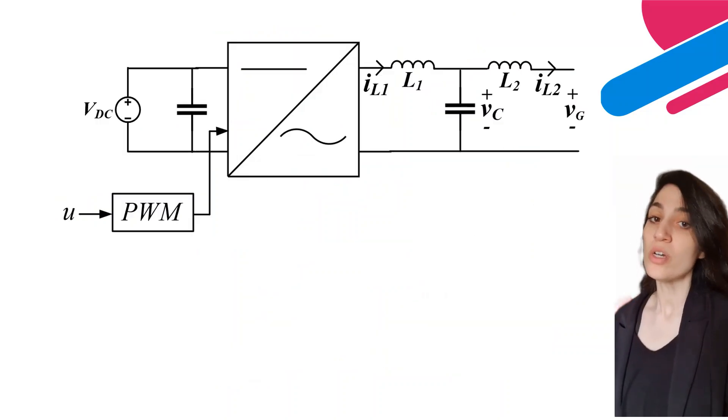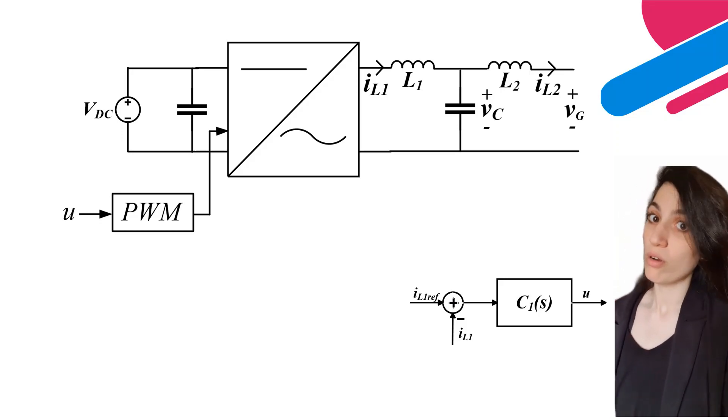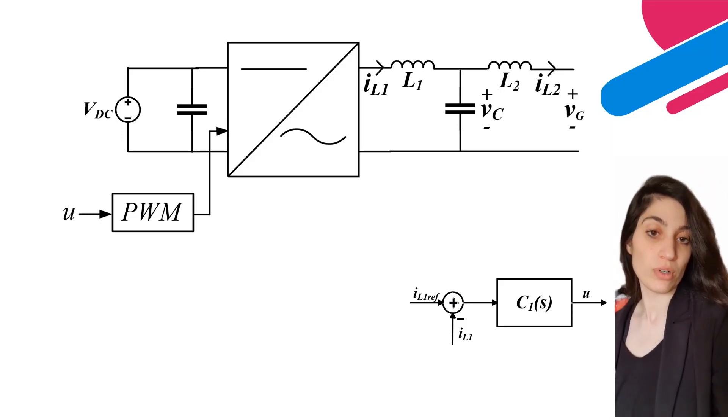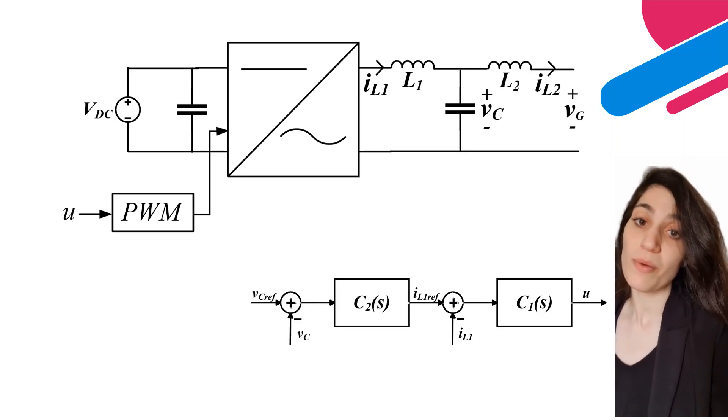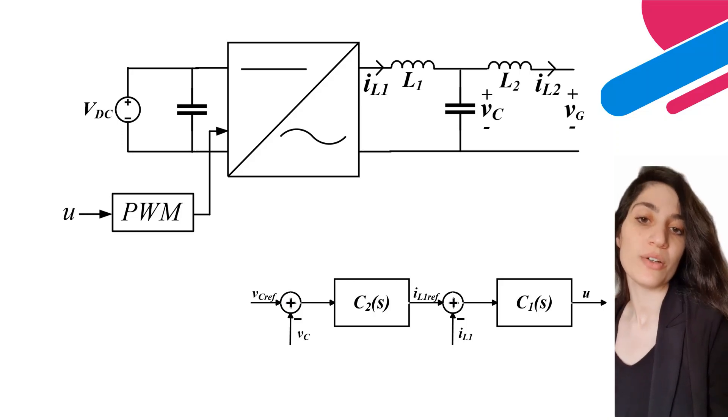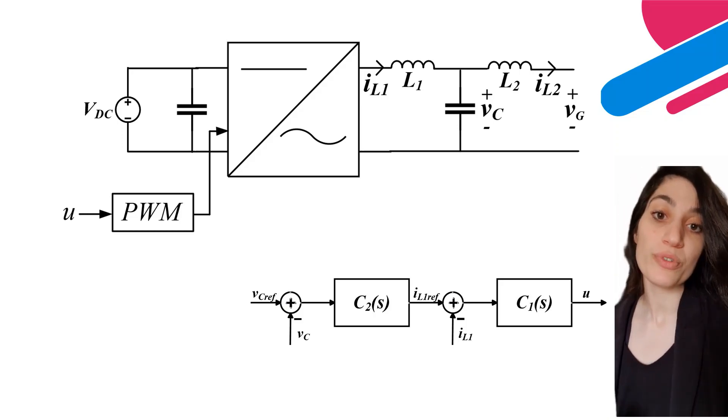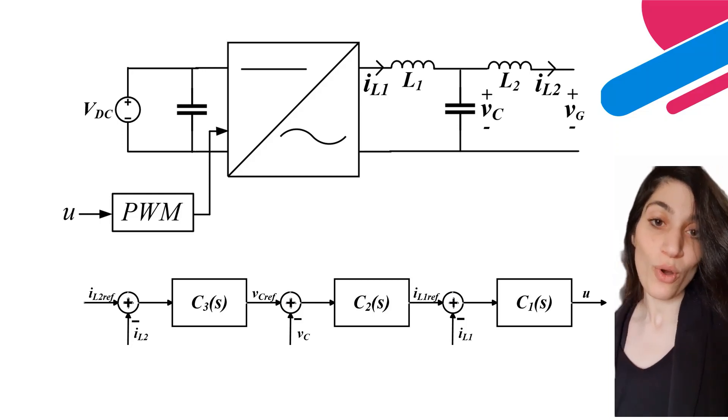We can design a controller that controls the output current from the inverter, or we can design a controller that controls the output voltage across the capacitor of the LCL filter, or we can design a controller that controls the output current that is injected into the grid, or we can control all of them.